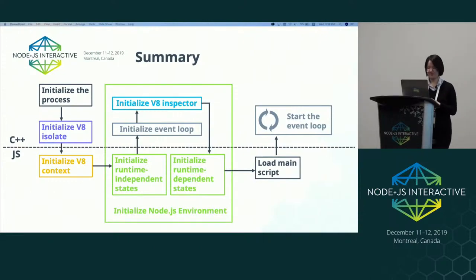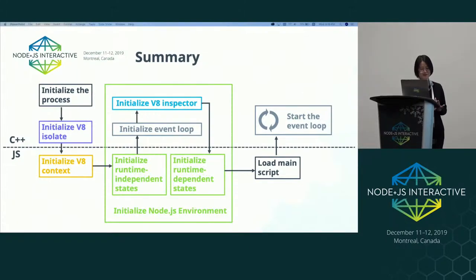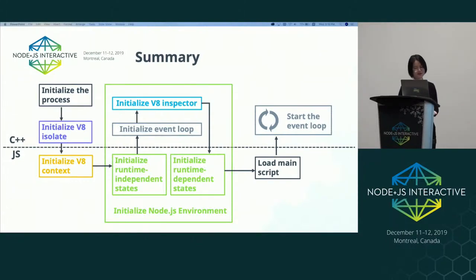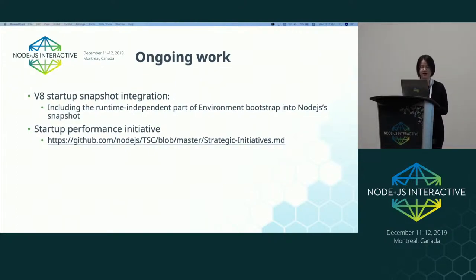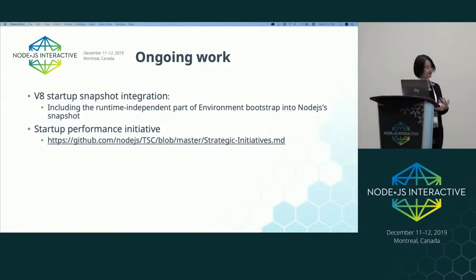So a quick summary of what we covered in this talk: to initialize a Node process from scratch, we first run per-process setups and then set up a V8 isolate, a V8 context, and a Node environment. The majority of work is done in the environment setup, which includes initializing the runtime-independent states, the event loop, the V8 inspector, and handling runtime-dependent configurations. We then select and execute the main script and start the event loop. As mentioned earlier, we now have integrated the V8 startup snapshot into Node. But at the moment, the snapshot only includes the context setups. We're currently working on including the runtime-independent part of the environment bootstrap into the startup snapshot to speed up the bootstrap further. This is currently the focus of the Startup Performance Initiative. Thank you.